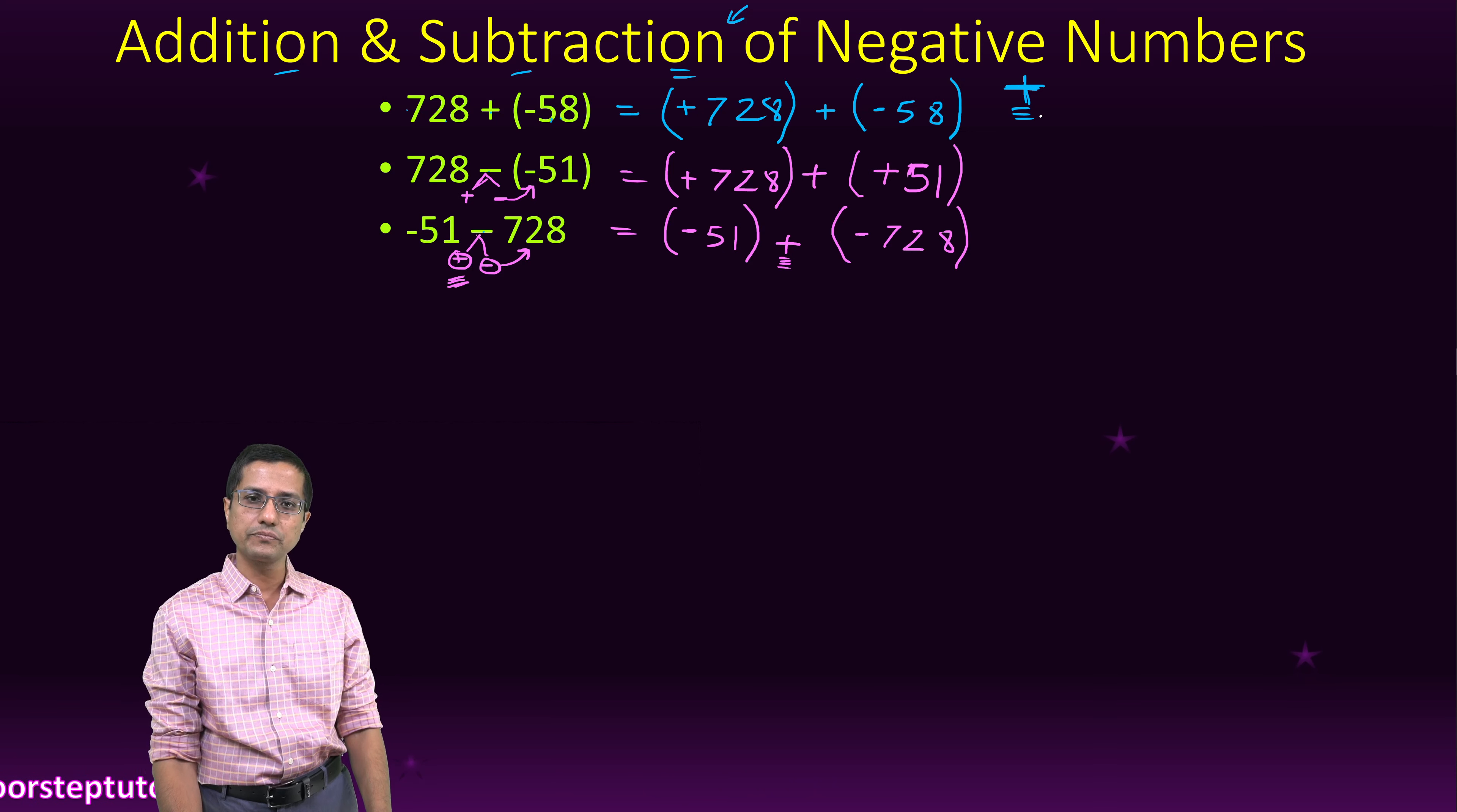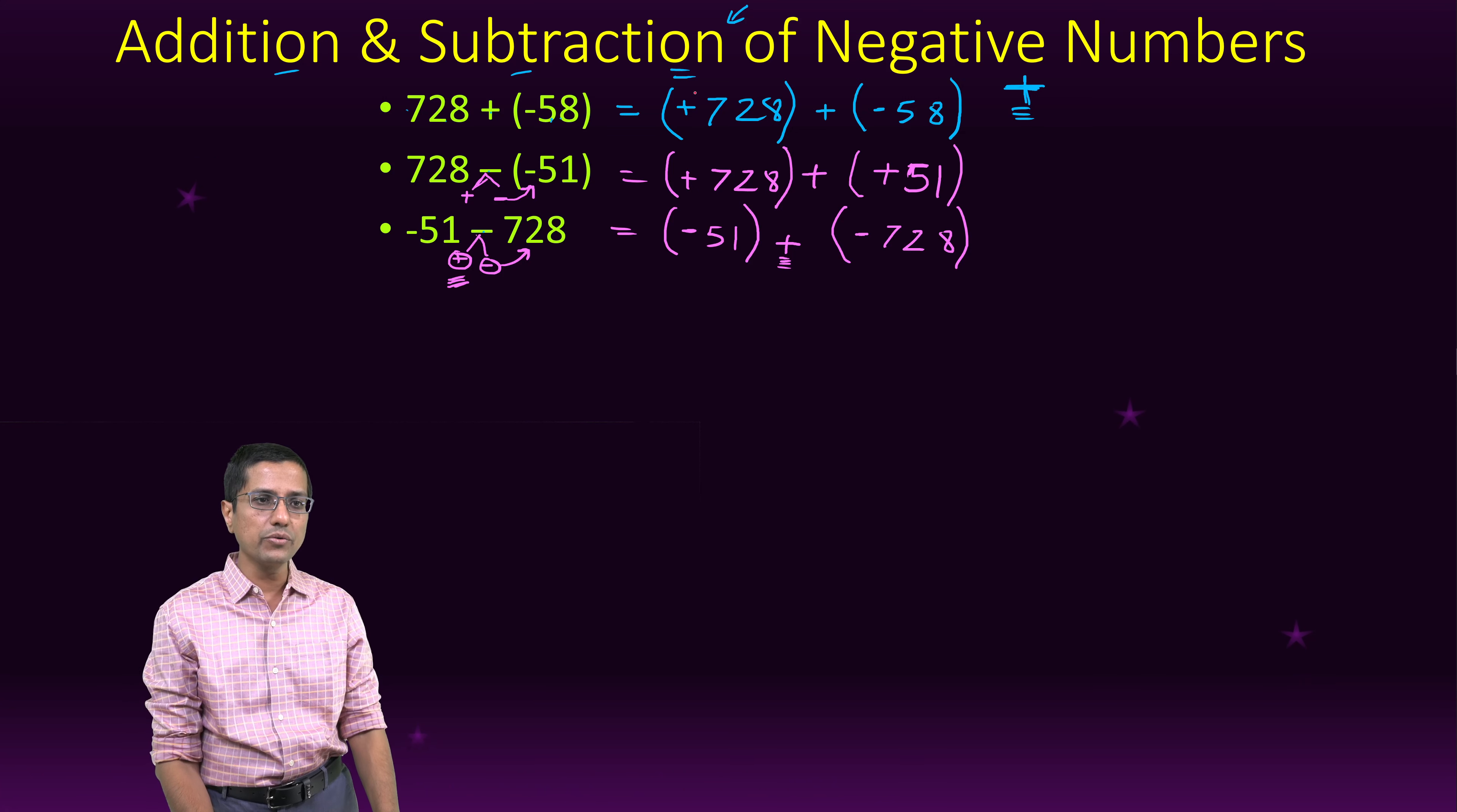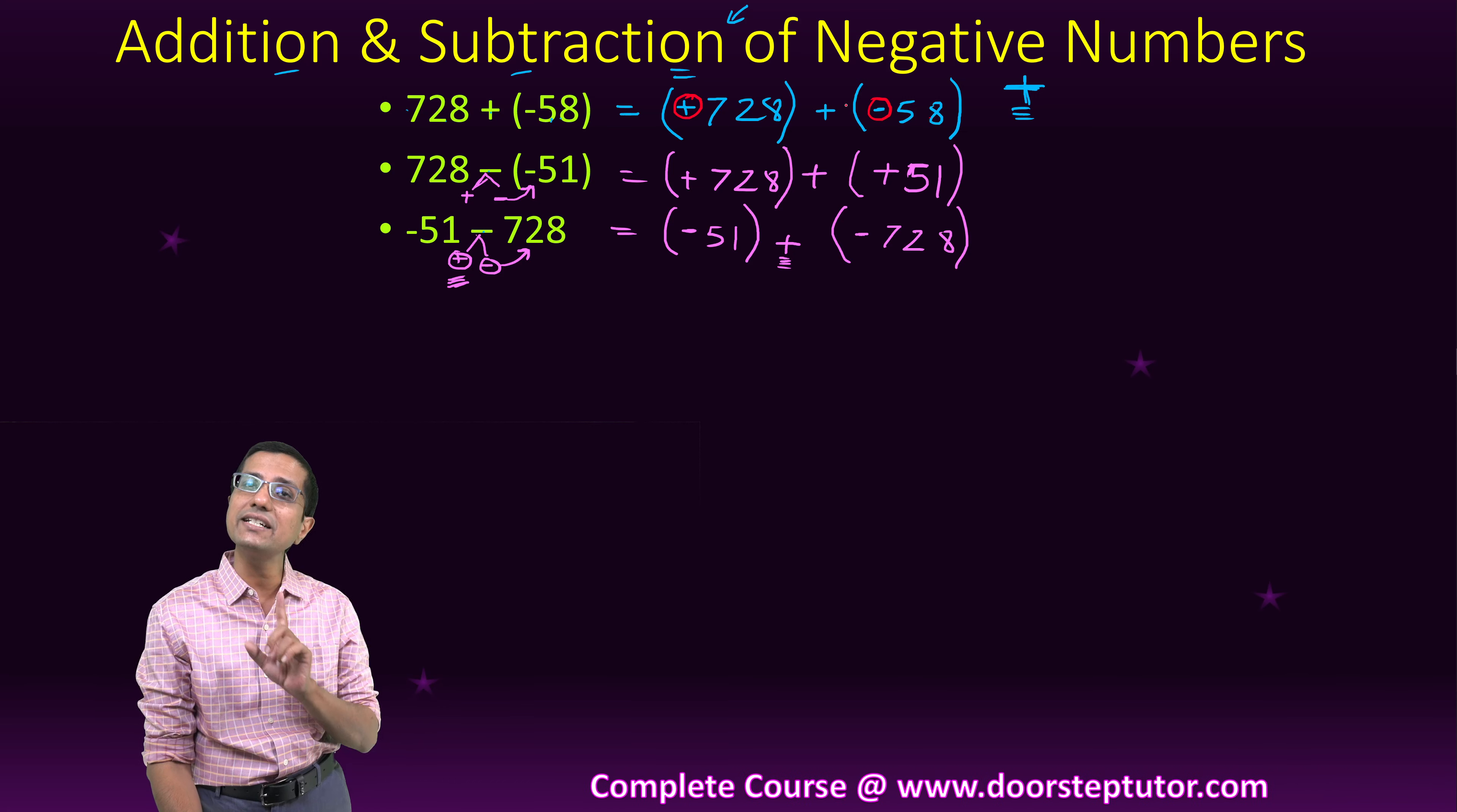Now we will follow a simple rule. What is the rule? If the two operands involved, so right here, this is the first operand and this is second operand. If they have different signs, so here there has to be a plus.